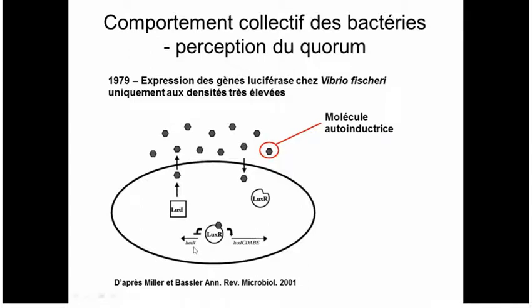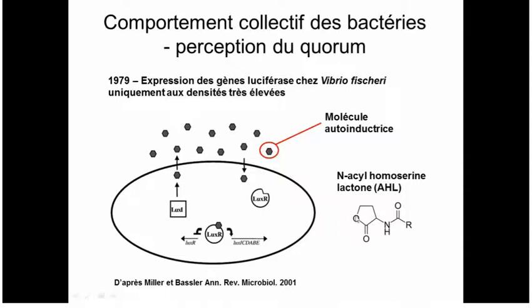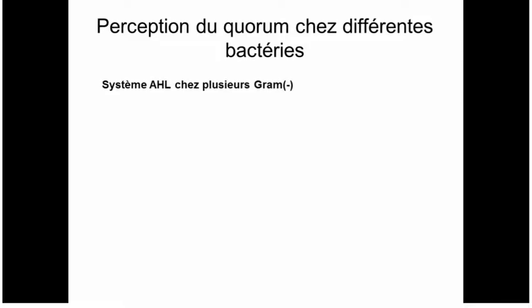LUXR is the regulator expressed from a different gene that inhibits itself — a negative feedback mechanism so the system doesn't run completely out of control. The autoinducer in Vibrio fischeri is a small lipid-soluble molecule: N-acyl homoserine lactone (AHL). R is a functional group that can differ between bacteria. The AHL system is used by many different gram-negatives as a quorum sensing mechanism — for example in Agrobacterium tumefaciens and Pseudomonas aeruginosa, where it's important in inducing biofilm formation and is an important virulence mechanism.